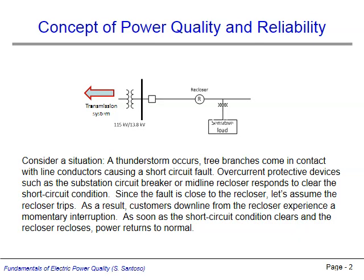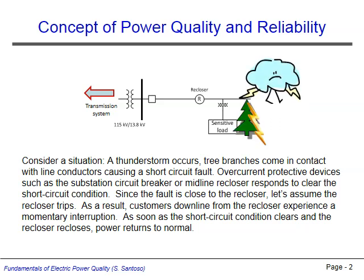To conceptually understand what is meant by power quality, consider the situation pictured here. During a thunderstorm, a tree branch makes contact with line conductors, creating a short circuit path to ground through which fault current flows. The recloser, located upstream from the fault location, senses the high level of current and trips, isolating the fault from the transmission system.